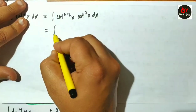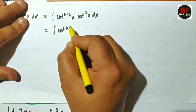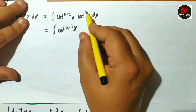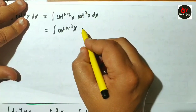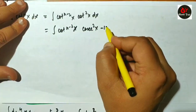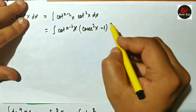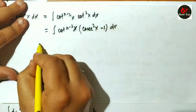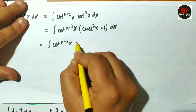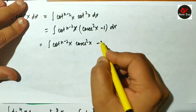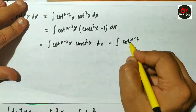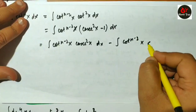We have the integral of cot to the power (n-2)(x) times cot squared x, but we can't use it directly because there's no direct formula. Therefore, I will express cot squared x as cosec squared x minus 1. This becomes integral of cot to the power (n-2)(x) times cosec squared x dx, minus integral of cot to the power (n-2)(x) dx.